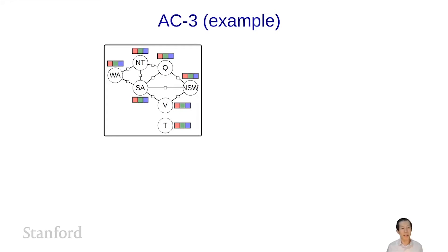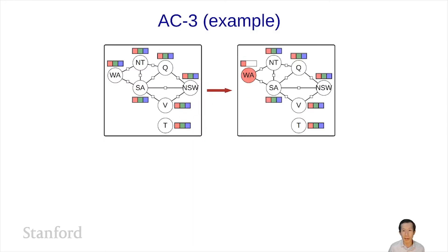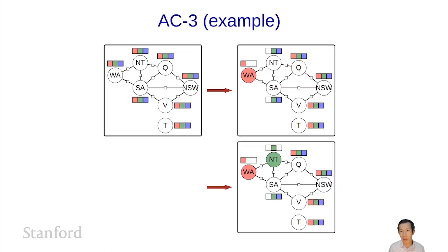Let's revisit the Australia example and apply AC3. Here is the empty assignment, and here are all the domains of each of the variables. Suppose we set WA to be red. We eliminate the other values from WA's domain, and then enforce R-consistency on the neighbors of WA — in this case, NT and SA. So out goes red on both of them. Now we continue to try to enforce R-consistency on the neighbors of NT and SA, but in this case we can't actually eliminate anything. So now we're going to recurse.